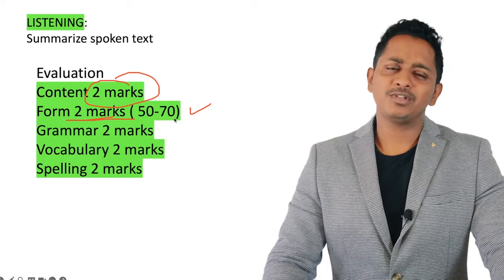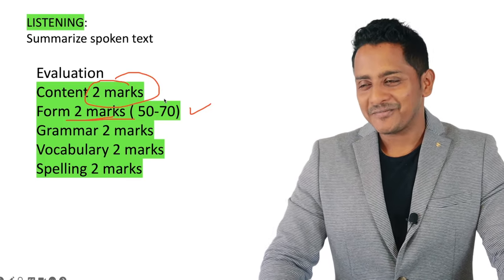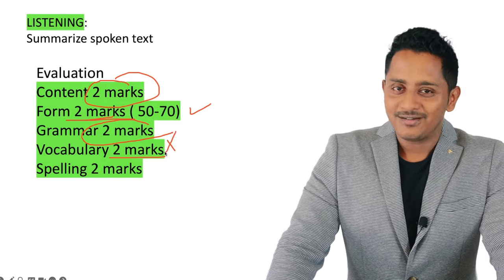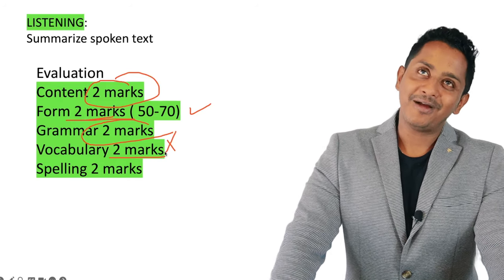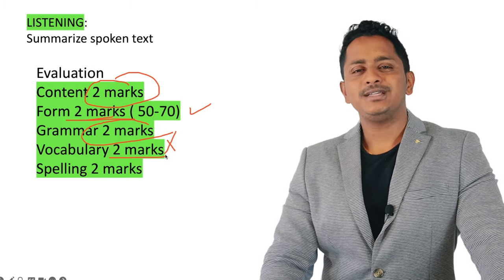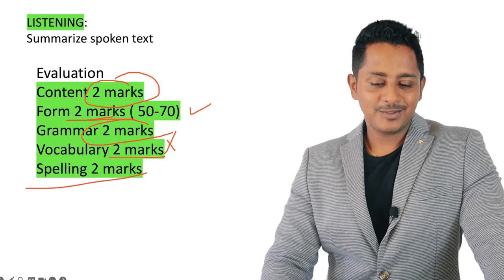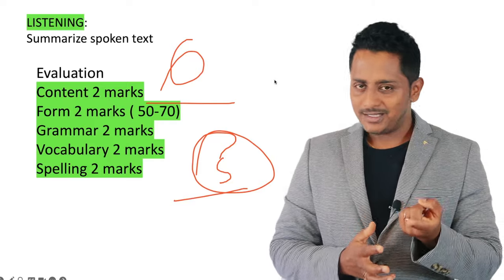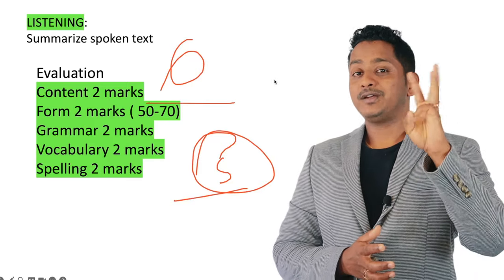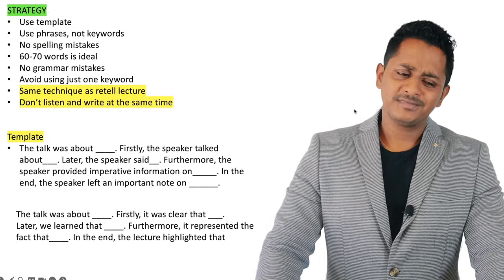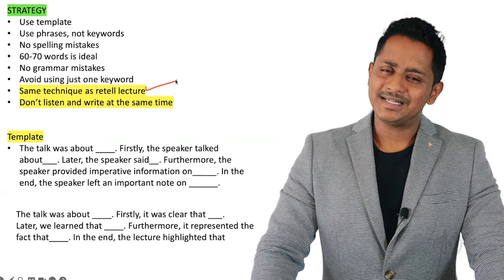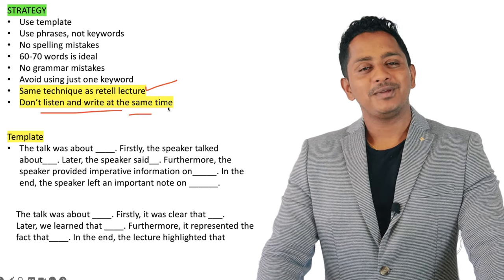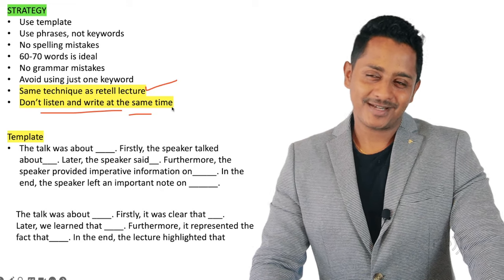Evaluation criteria for Summarize Spoken Text: Content — 2 marks (not a huge priority but can't be ignored). Avoid just keywords — listening marks will definitely drop. Form is very important: 50 to 70 words strictly. If you exceed 70, you will lose two to three marks minimum. Less than 50 words is also penalized. Grammar is important here — unlike Retell Lecture, you cannot mess up grammar. Spelling is two marks — if you write 65 words and make five spelling mistakes, you'll get zero.